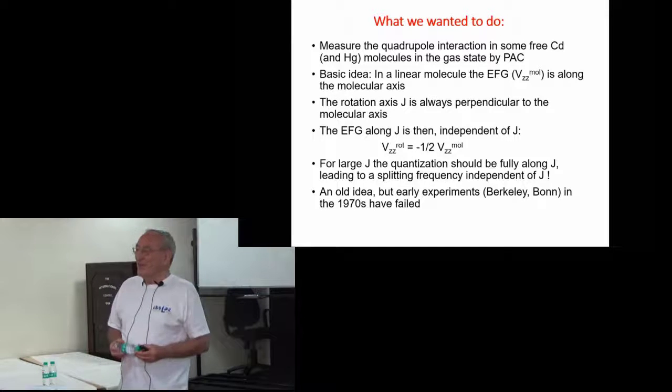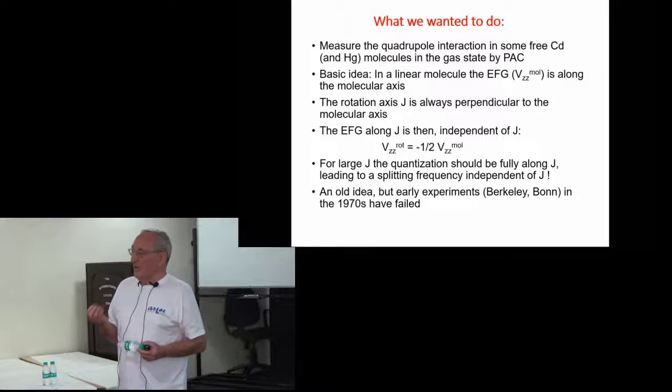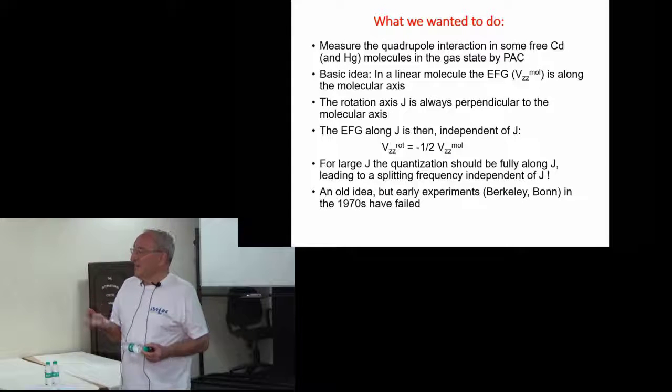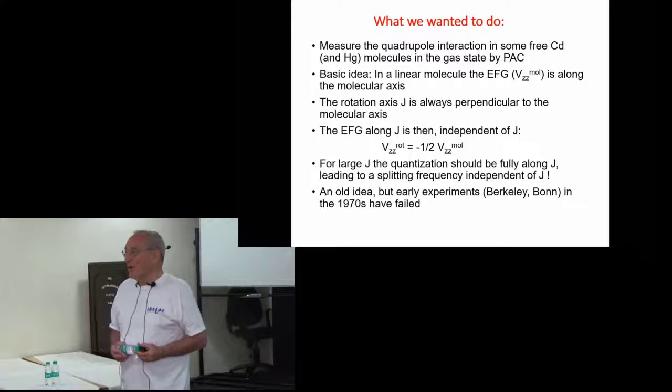So what we wanted to do in this experiment is to measure the quadrupole interaction in some simple molecules. The idea is that if you want to study a molecule with perturbed angular correlation, the electric field gradient has to be oriented and stable in orientation during the time of the measurement. The time of the measurement is typically a few hundred nanoseconds or even only a few nanoseconds. So how do you achieve that in the gas or for a free molecule?